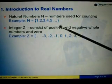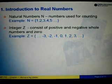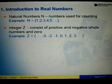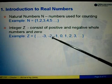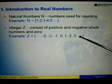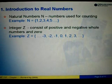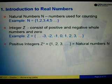Next, we have integers. Now, integers are numbers that consist of positive and negative whole numbers, inclusive of 0. For example, we have negative numbers, and then we have 0 and we have all the positive numbers. But these must be whole numbers.